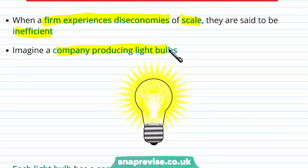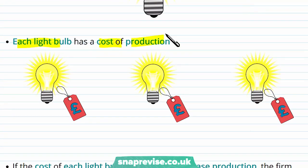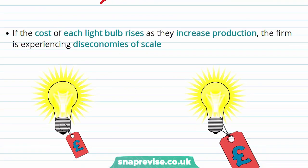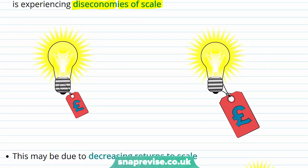Imagine a company producing light bulbs. Each light bulb has a cost of production. So let's just say our cost of production is 50p. If the cost of each light bulb rises as they increase production, the firm is experiencing diseconomies of scale. So suppose our light bulb which used to be 50p for production now costs 60p.